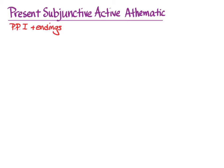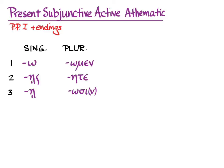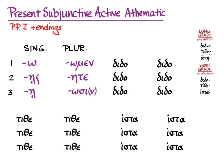The present subjunctive active for athematic verbs comes from the first principle part, and then we'll need some endings — o, ace, a, omen, eta, ose — which are the endings that you already know. But we're in mi-verbs now, so we have to think about long grade versus short grade stems. The present subjunctive active immediately fails the qualifications for a long grade stem because it's not indicative, so all stems — singular and plural — will be short grade stems. The way the subjunctive works with these mi-verbs is that each verb acts as a contract verb of its respective kind: didomi will act like an omicron contract verb.